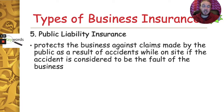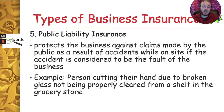Public liability insurance is a common one you'll hear about. It protects the business against claims made by the public for accidents on site, where the accident is considered to be the fault of the business. For example, if you go into a supermarket and cut your hand on broken glass that hadn't been properly cleared from a shelf, that injury occurred due to the negligence of the supermarket and you can make a claim against them. Another example would be tripping on a slippery wet floor that didn't have adequate warning signs.